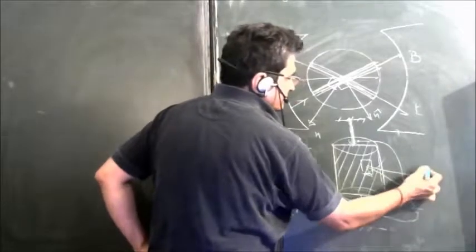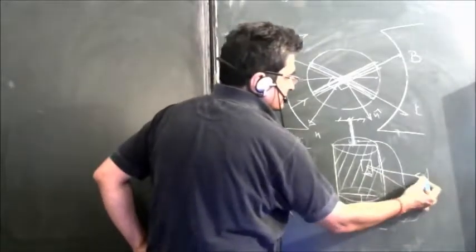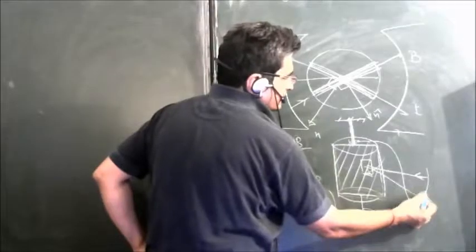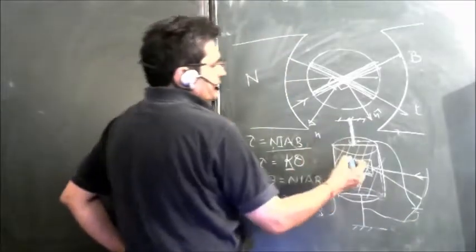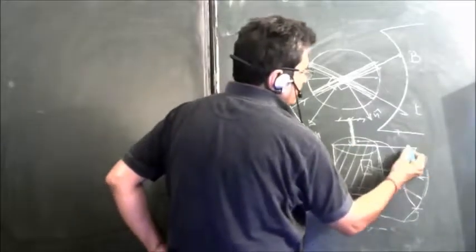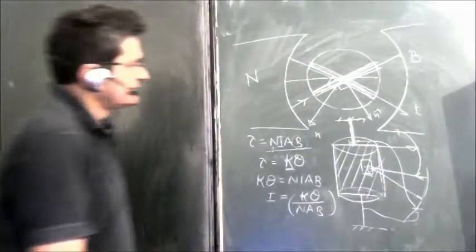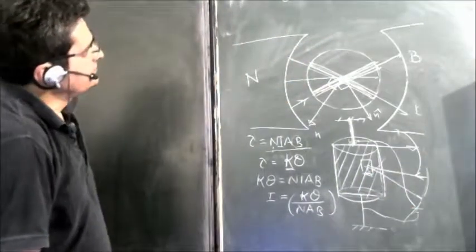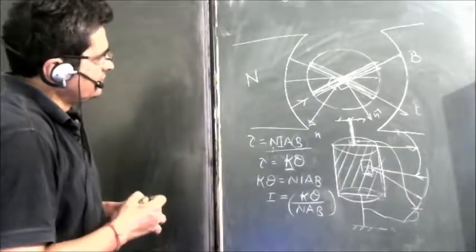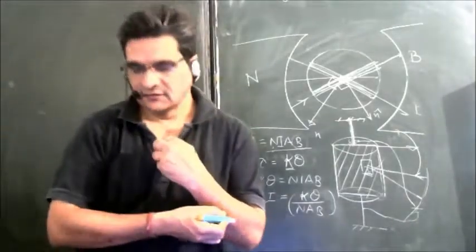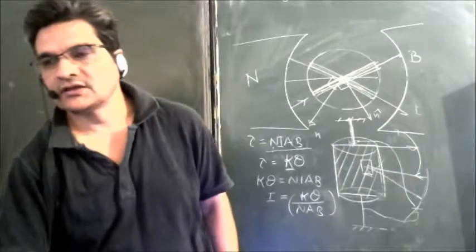We can measure angle theta by various means. We can place a reflecting mirror which gives the reflection on a certain scale. There is a source of light and you can measure on that. You can also have a needle kind of arrangement moving along a scale to measure angle theta. So this is the basic principle on which the moving coil galvanometer works. Thank you.